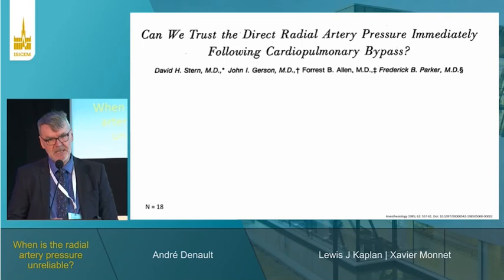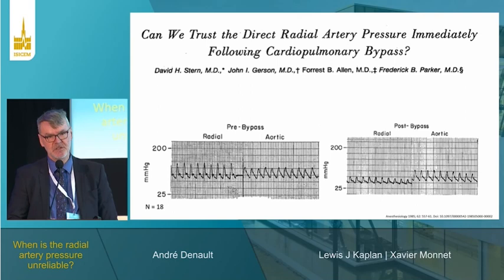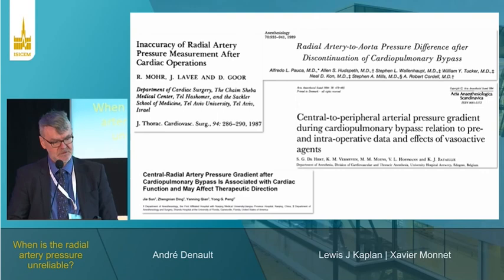The concept of unreliable radial artery pressure in cardiac surgery is not new — it's been described several years ago. Pre-bypass radial and aortic pressures are comparable, but post-bypass you can see a huge difference between the aortic and the radial artery pressure. The authors concluded that radial artery pressure does not reflect the central aortic pressure in the immediate post-bypass period, and these observations have been made worldwide by several centers.